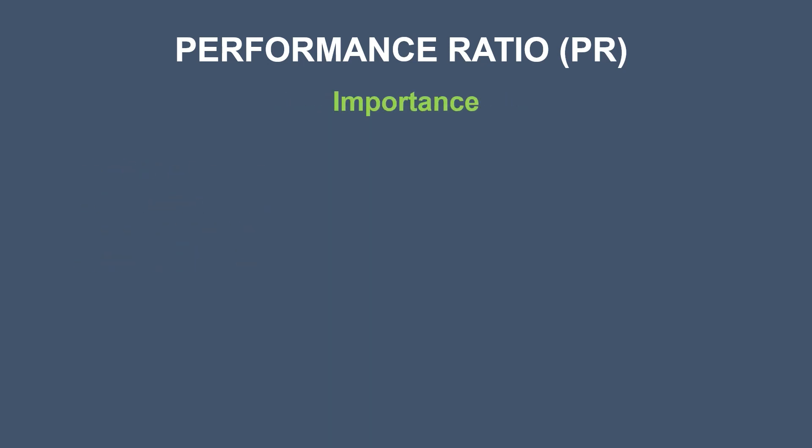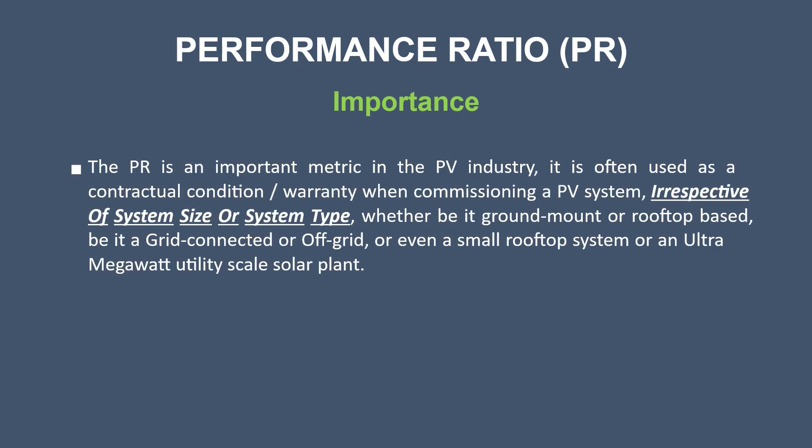So what is the significance of plant performance ratio? PR is an important metric in the PV industry. It is often used as a contractual condition or contract warranty when commissioning a PV system, irrespective of system size or type — whether it be ground-mounted or rooftop-based, grid-connected or off-grid, a small rooftop system or even an ultra-megawatt utility-scale solar plant.